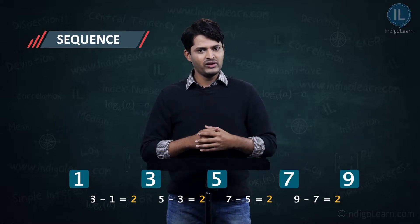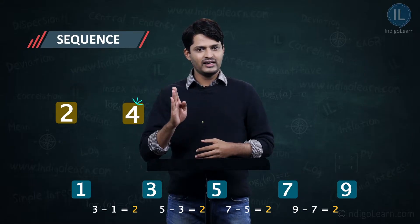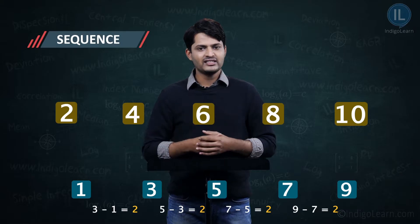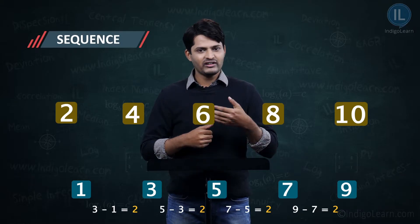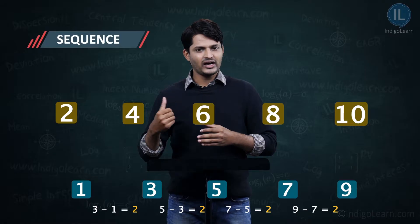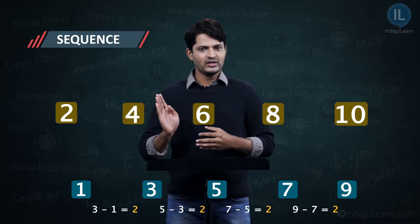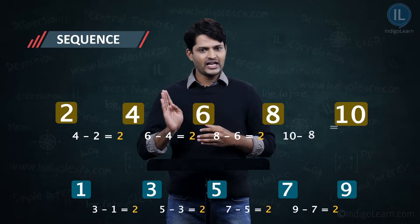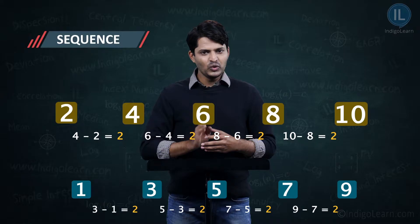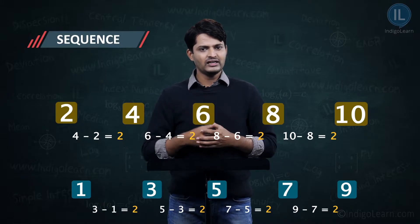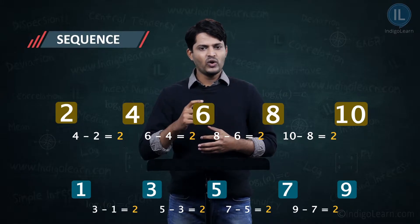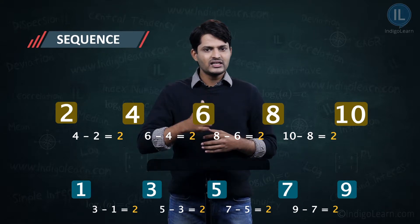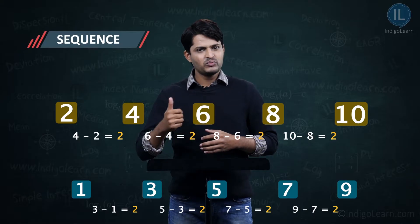Let's take another example: 2, 4, 6, 8, and 10. Do you observe any pattern in these numbers? Here also, each number differs from the previous by 2 — in other words, these are even natural numbers starting with 2. In both cases, these patterns follow a definite sequence, meaning you can predict what the next term will be.